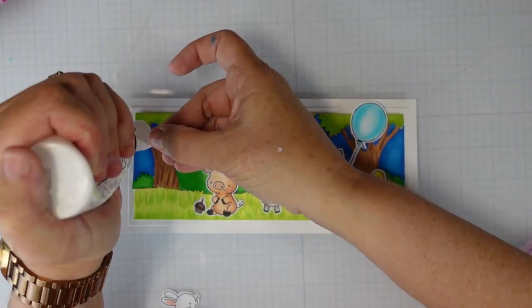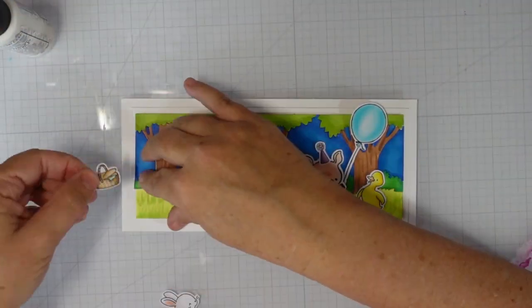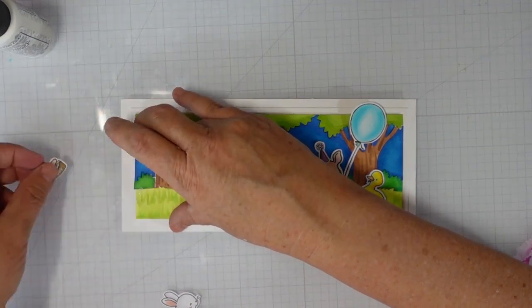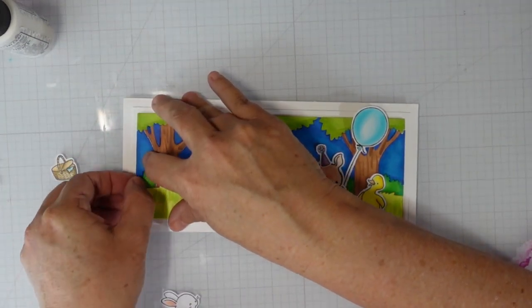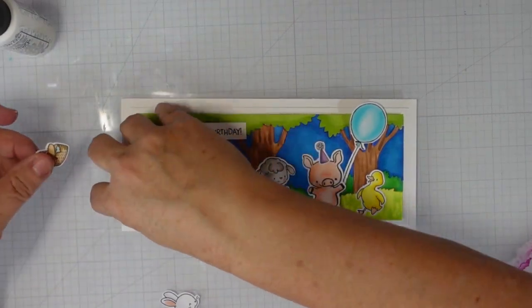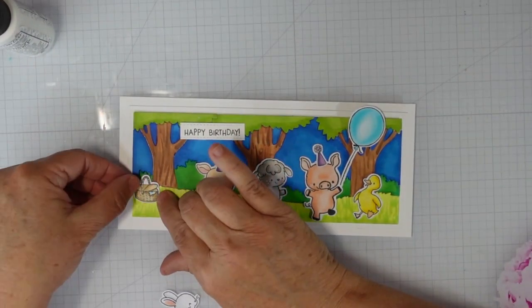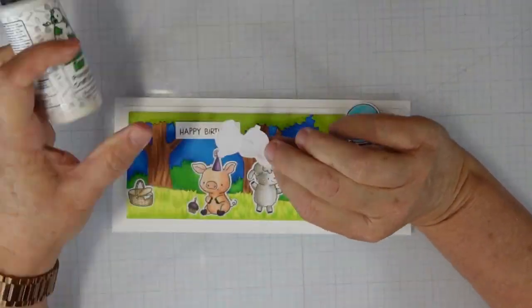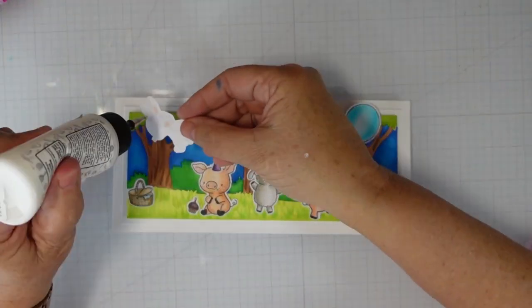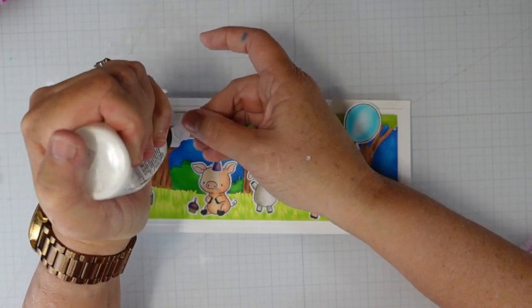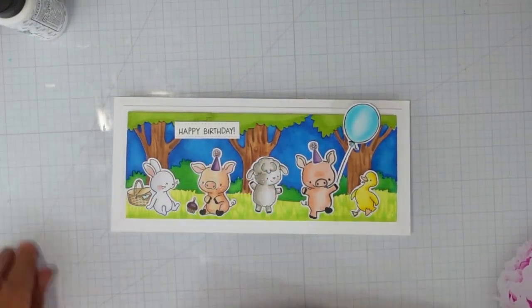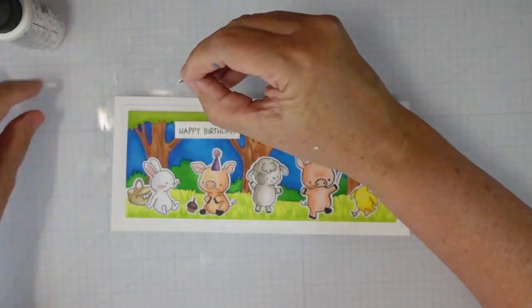I'm going to use my wet glue to glue all of my images down. Again, I did Copic color all of those images. I added a little bit of texture or a little bit of rosiness to their cheeks, and then I used a white gel pen to add some of the dots to give those freckles.